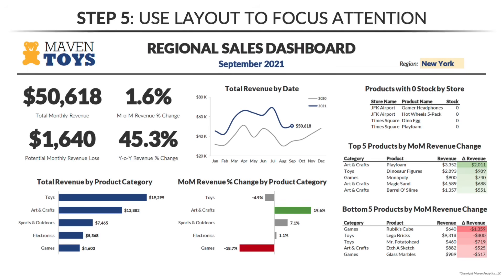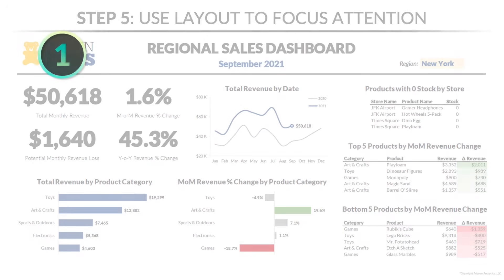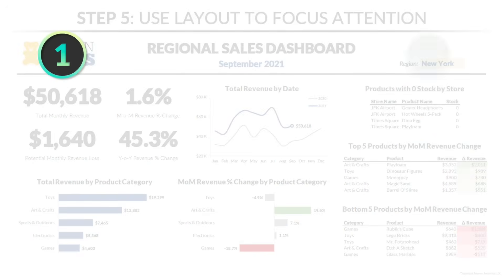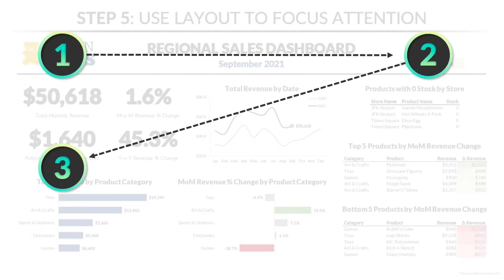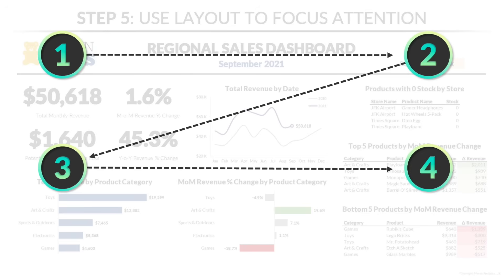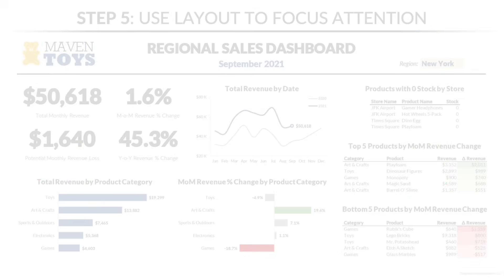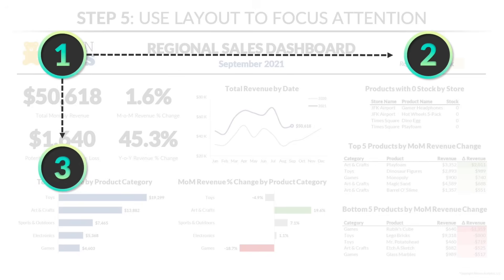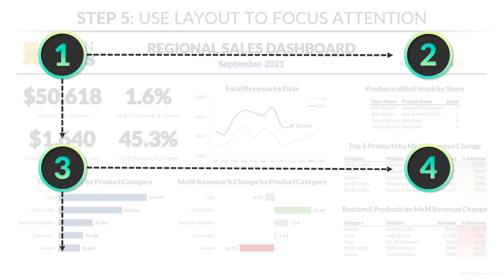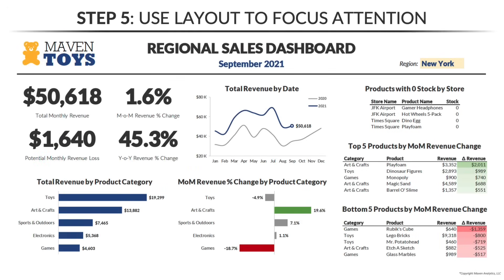In most Western cultures, viewers typically start by looking at the top left corner of the page, scan to the right, then make their way down the page from left to right, following either a Z reading pattern or an F pattern, which is similar. Either way, the point is to feature the most important high-level information towards the top left of the canvas. So one thing we might tweak is rearranging our header to put the dashboard title in that top left corner, and bump the logo — which is less important — to the right of the page.